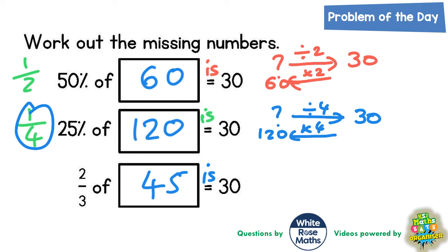The last one is slightly more difficult. So if we've got a mystery number to start with and we're finding two thirds of it, we would first of all divide it by three to find one third, and then times by two to find two thirds, and our answer is 30.